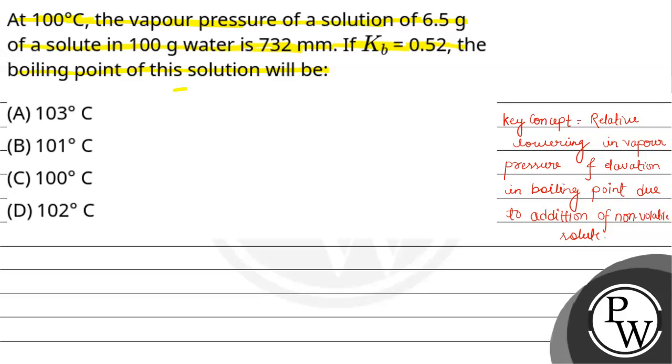Here, for relative lowering of vapor pressure, the expression is P0 minus P divided by P0 equals mole fraction of solute.